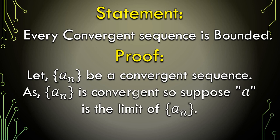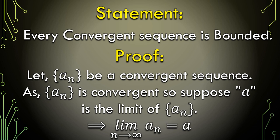So as we supposed a_n is a convergent sequence, that means a_n has a limit. Let's say a is this limit, and a_n approaches a as n tends to infinity, which is written mathematically right here.